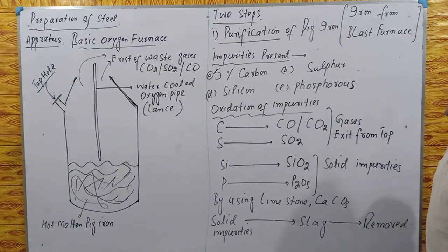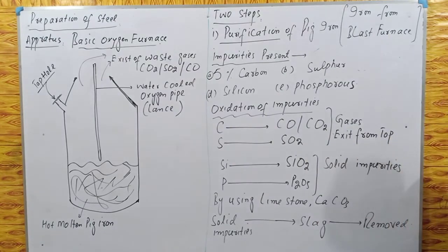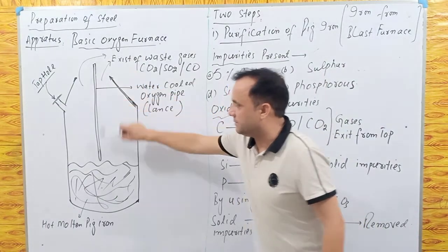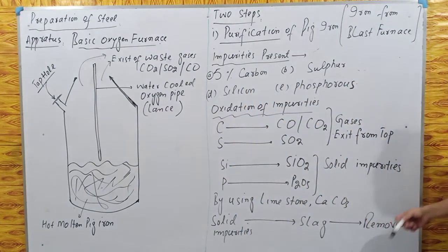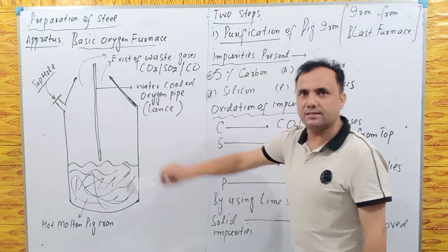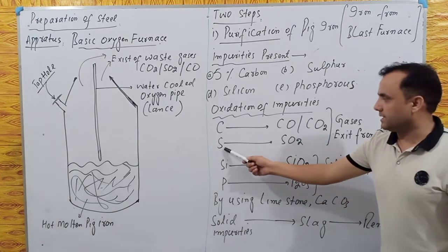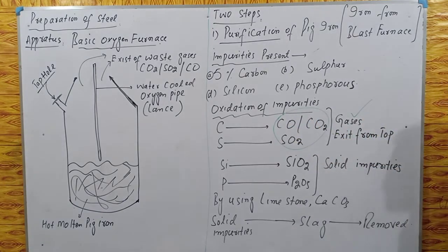This furnace is called the basic oxygen furnace or basic oxygen converter because all the impurities present in the pig iron are first oxidized with the help of oxygen, which enters through a port into the molten pig iron. Carbon oxidizes to carbon monoxide and carbon dioxide, and sulfur oxidizes to sulfur dioxide.